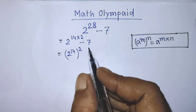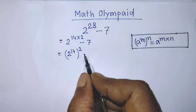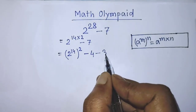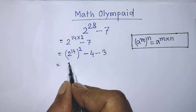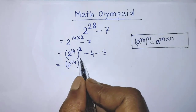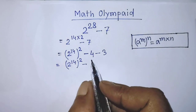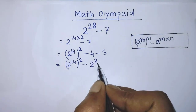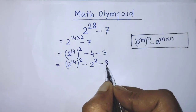And so guys, in the place of minus 7, we can write minus 4 minus 3. So it will be 2 to the power 14, whole to the power 2, minus — in the place of 4, we can write 2 to the power 2 — minus 3.